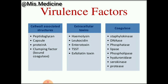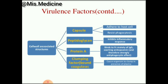The virulence factors include cell wall associated structures, extracellular toxins, and coagulase. Cell wall associated structures are divided into: capsule, peptidoglycan, protein A, clumping factor, and bound coagulase. The capsule adheres to host cells and resists phagocytosis. Peptidoglycan inhibits the inflammatory response. Protein A binds to the Fc moiety of immunoglobulin G, exerting anti-opsonin and strongly anti-phagocytic effects.